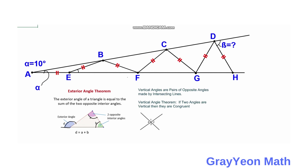For the next theorem we are going to use the vertical angles theorem. This theorem states that if two angles are vertical then they are congruent. In this case, angle four and two are vertical angles so they are congruent, and angle one and angle three are vertical angles so they are congruent — they have the same measurement. Vertical angles are pairs of opposite angles made by intersecting lines.